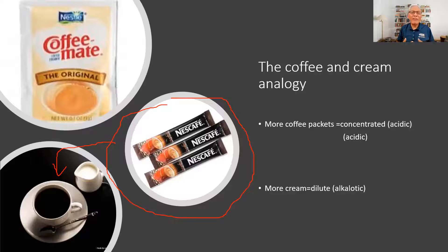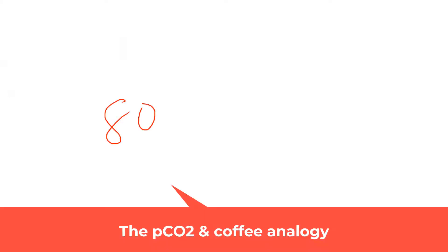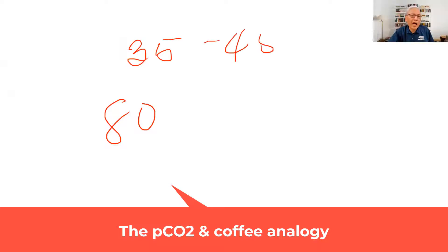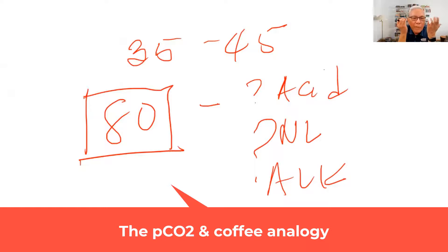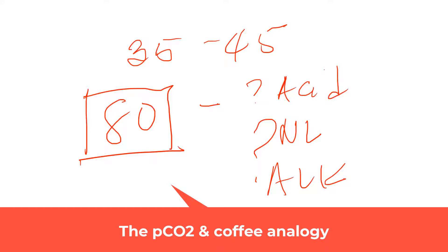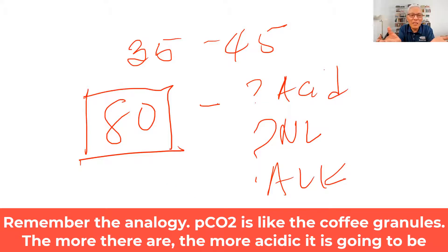If I have a PCO2 of 80, and the normal PCO2 is 35 to 45, am I going to be acidic, normal, or alkalotic? Acidic — there's too much coffee. Think about that. When you are fixing your coffee and you put too much of it, obviously it's going to be too acidic.